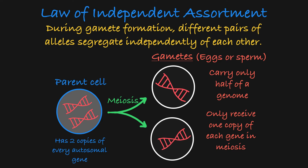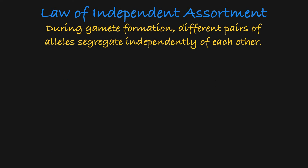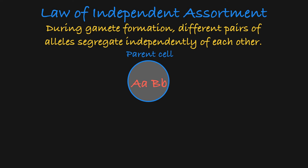The parent genome is made up of thousands of genes, but let's look at an example with just two genes. Let's say this parent is heterozygous for both gene A and gene B. This would be their genotype.